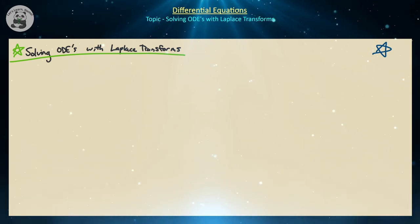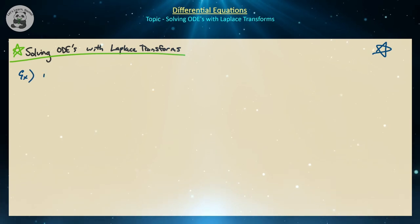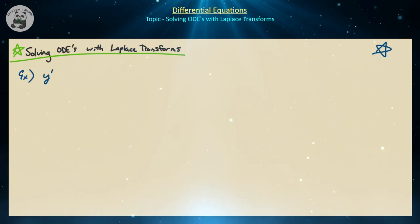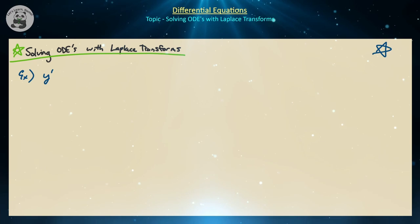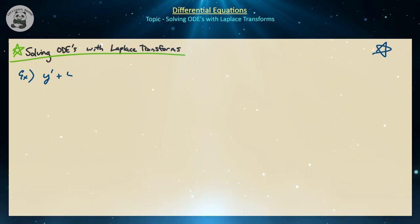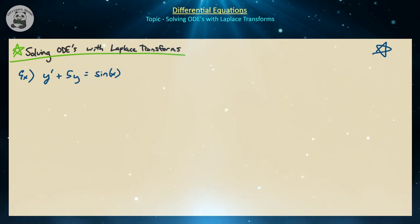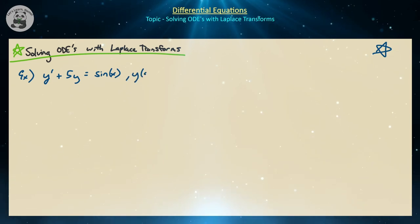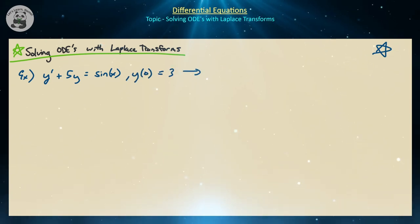As a very basic starting example, we're going to look at a first order linear inhomogeneous differential equation: y prime plus 5y is equal to the sine of x, with the initial condition that y of 0 is equal to 3.